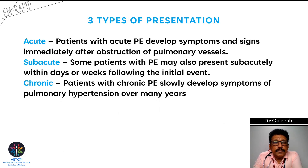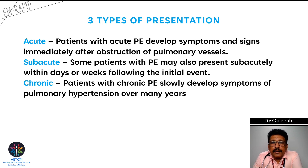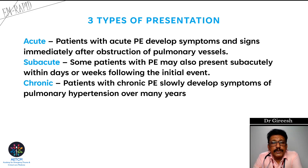There are three types of presentation: acute, subacute, and chronic. Patients with acute pulmonary embolism develop symptoms and signs immediately after obstruction of pulmonary vessels, and can present with severe chest pain mimicking acute myocardial infarction. Subacute patients may develop progressive symptoms like cor pulmonale. Chronic patients develop pulmonary hypertension over many years. We will mainly deal with acute pulmonary embolism, which is most common in the emergency room.